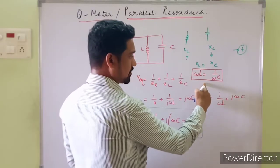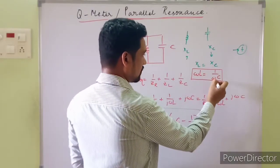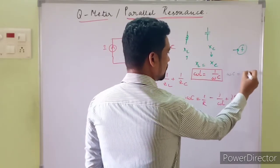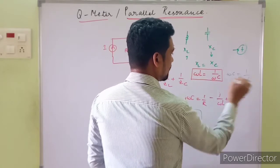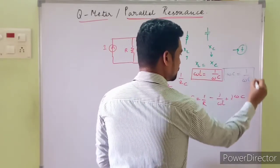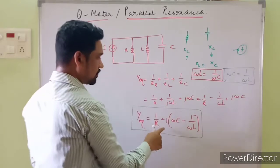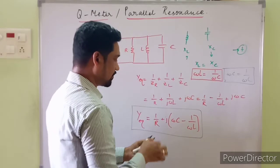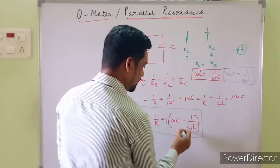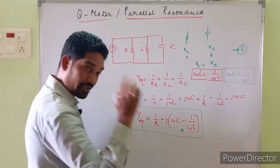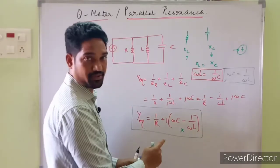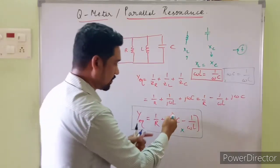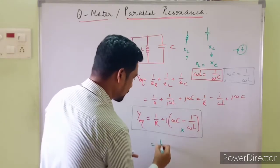So ωL = 1/(ωC) is true, and equally ωC = 1/(ωL) by cross-multiplying is also true — this happens at resonance. So at resonance, these two quantities are equal and we don't have that imaginary part. We are left with 1/R — so the equivalent admittance at resonance is 1/R.